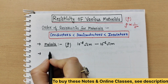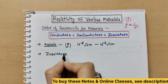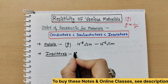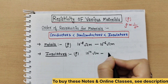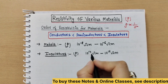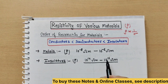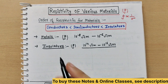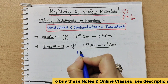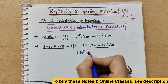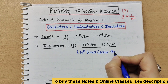Now what about insulators? Insulators need to have much higher resistivity. The resistivity of insulators ranges from 10 raised to the power 8 up to 10 raised to the power 14 to 16 ohm meter. This is a very high range. Since resistivity is very high, conductivity will be very low — meaning current barely flows through insulators.